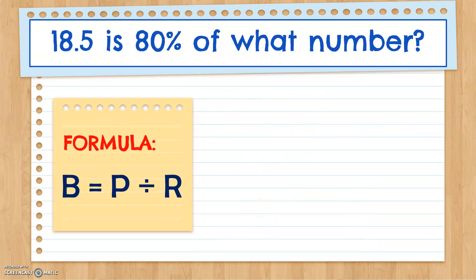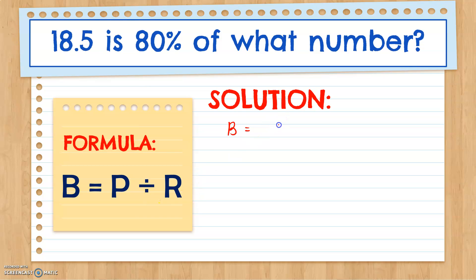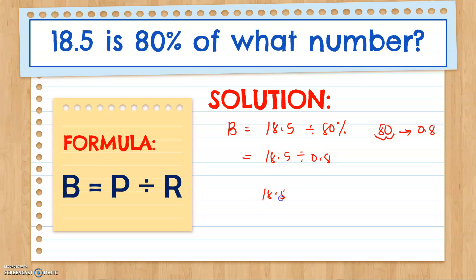Let's try another one. 18.5 is 80% of what number? Again, we find the base using the formula P divided by R. Our percentage is 18.5, divided by 80%. Converting 80% to decimal by moving two times to the left gives us 0.80, or just 0.8. So we divide 18.5 by 0.8. The divisor is a decimal, so we move the decimal point once to the right, and also once to the right in our dividend. Our new numbers are 185 and 8.